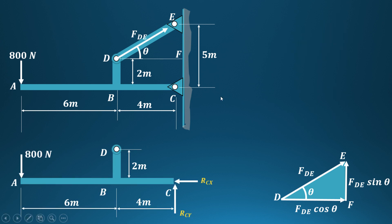The reactions developed at this end are: a reaction in the x-direction RCx and a reaction in the y-direction RCy. The resolved components of FDE are shown — the horizontal component FDE·cos θ and the vertical component FDE·sin θ are both indicated.